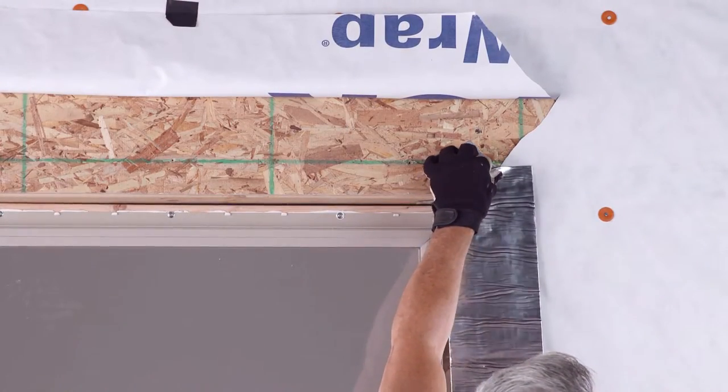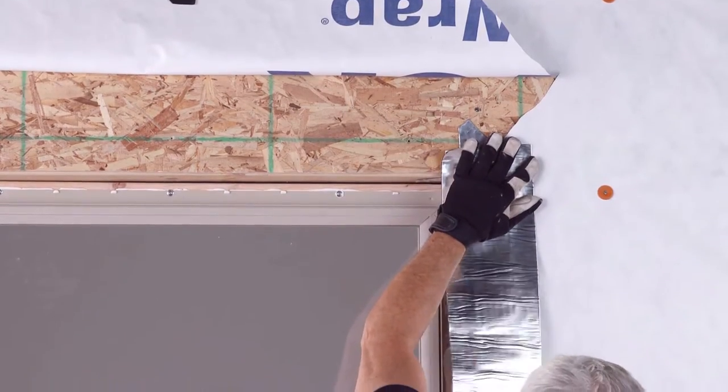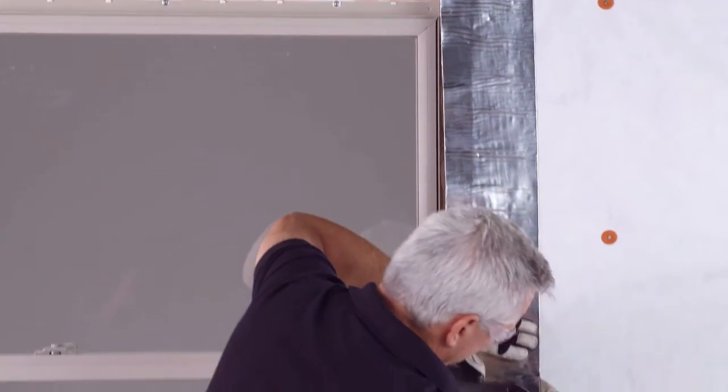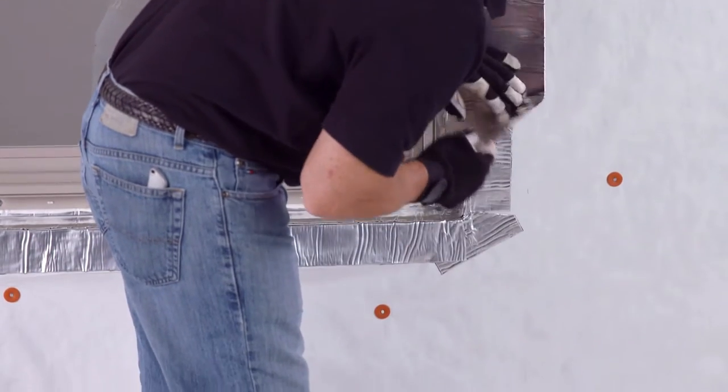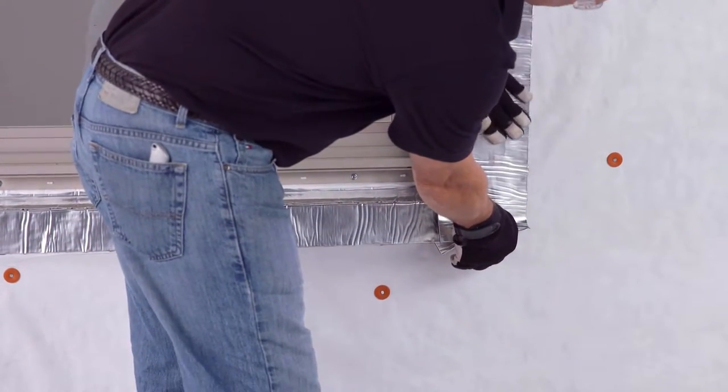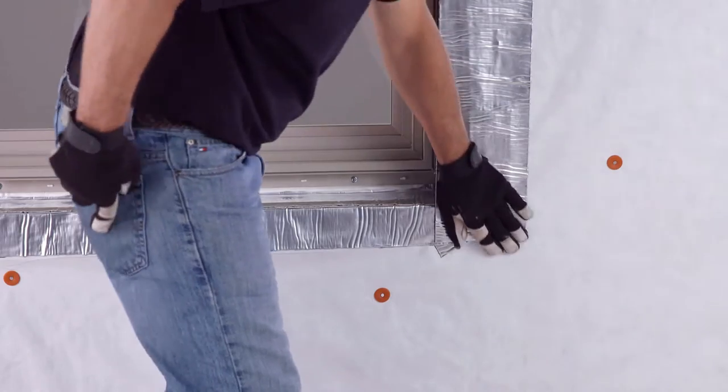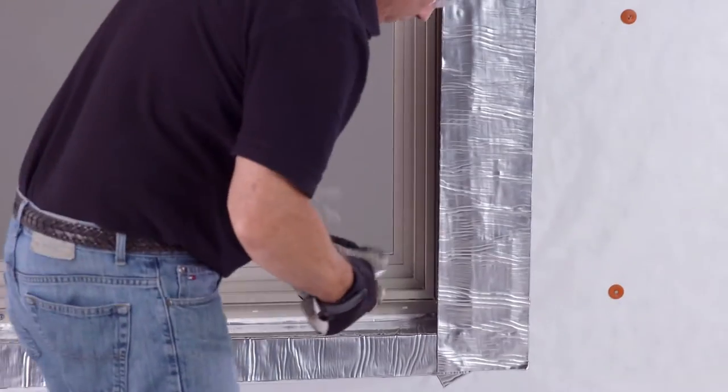Now it's time to apply the flashing tape to the side jams. You will need to lap two pieces of tape to flash the opening. Start by laying the first piece over the WRB. Make sure the side jams flashing covers the exterior corner guards and sill flashing.